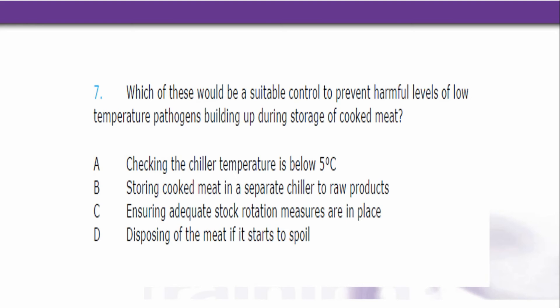Number 7. Which of these would be a suitable control to prevent harmful levels of low temperature pathogens building up during storage of cooked meat? Is it: A. Checking the chiller temperature is below 5 degrees C? B. Storing cooked meat in a separate chiller to raw products? C. Ensuring adequate stock rotation measures are in place? D. Disposing of the meat if it starts to spoil?